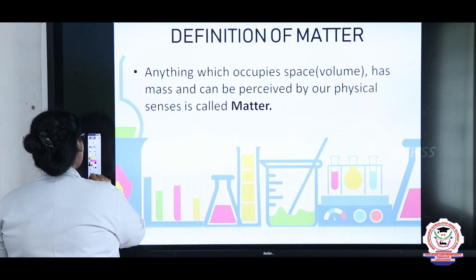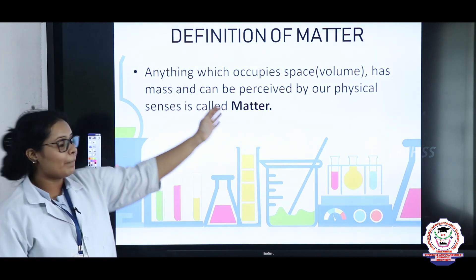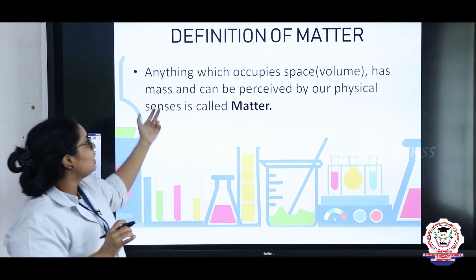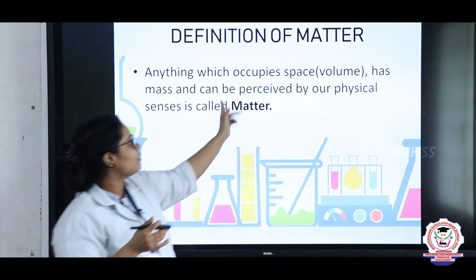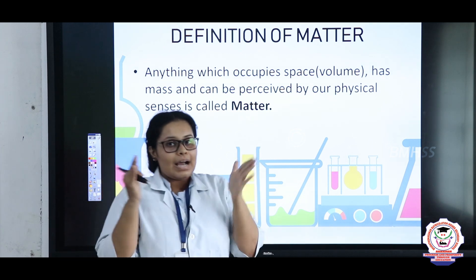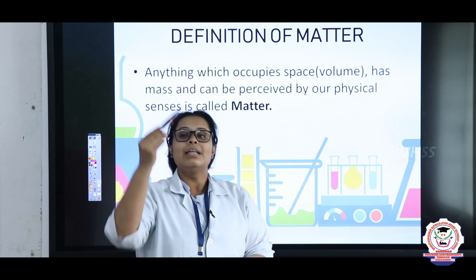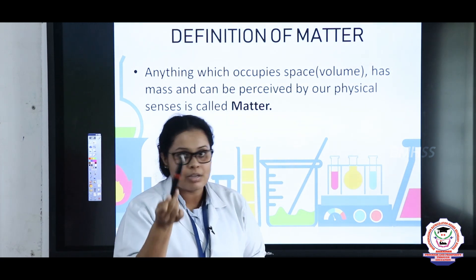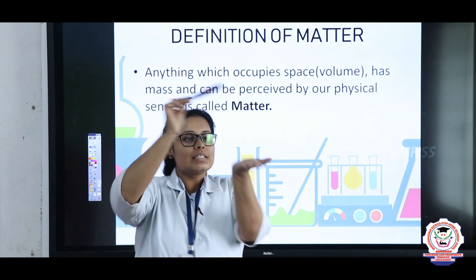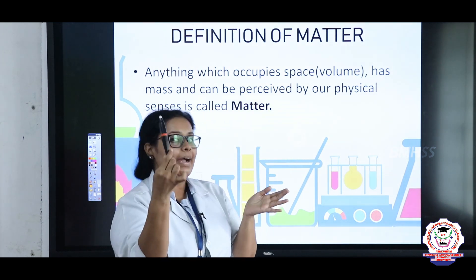What is the definition of matter? Anything which occupies space — or you can call it volume — and has a mass which can be perceived by our physical senses is called matter. For example, I am taking this pen. This pen is having some kind of mass, and this mass is also called volume. This pen is occupying a particular shape in my hand, so I can call it a kind of matter.